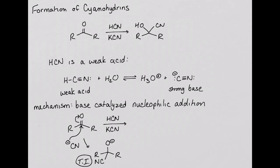In the final step of the mechanism, the tetrahedral intermediate alkoxide ion is protonated using hydrogen cyanide. This produces the cyanohydrin product.